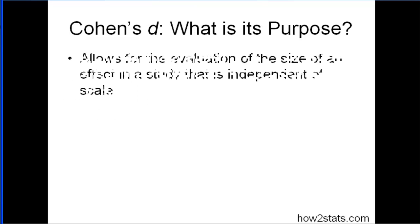So Cohen's D, what is its purpose? It allows the evaluation of the size of an effect in a study that is independent of scale, as I mentioned earlier. It doesn't matter what kind of measurement somebody used to measure the dependent variable. If you know Cohen's D, and it's reported in that study, then you can interpret the effect size.